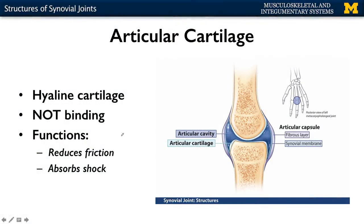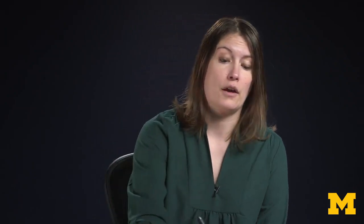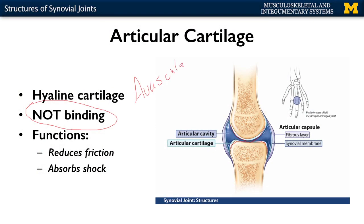We also have articular cartilage, which is on the ends of bone. An important point here: this is not actually binding the bone. It's only there in case the bones actually do contact one another, in order to absorb shock and prevent the pain that would occur from bone-to-bone contact — reducing friction and absorbing shock. It is avascular though, so anything avascular typically doesn't heal well or may not heal at all. That's why you have a lot of surgeries associated with articular cartilage replacement.